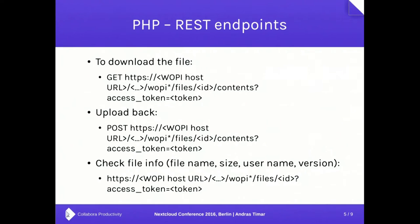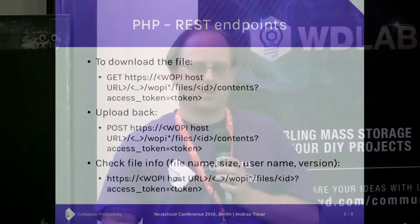There are three REST endpoints that we need here. One is to get the document from the storage to the Collabora Online server. The second is to upload it back when we save. And the third is mandated by the WOPI protocol — the check file info — which can be used to transfer the file name, the user name, the file size, and the file version, so we can even do versioning.